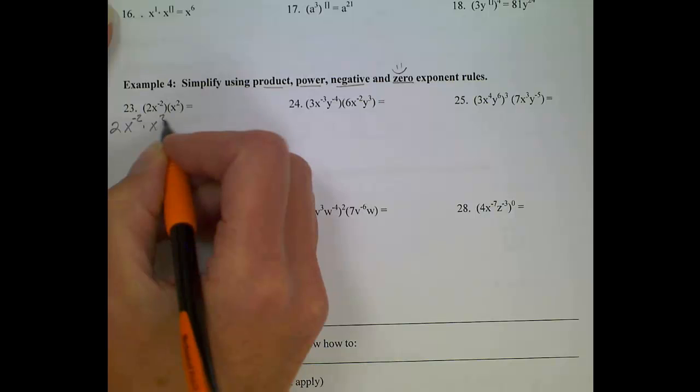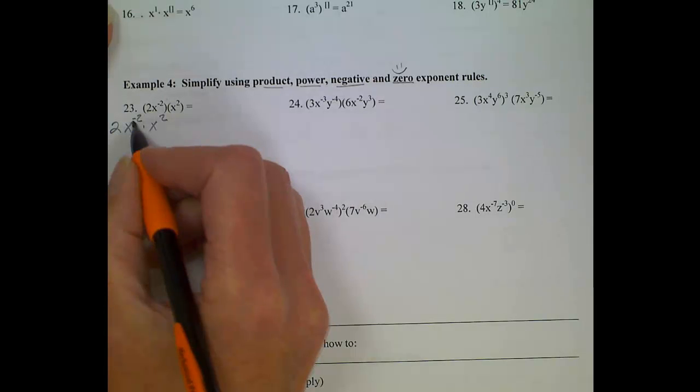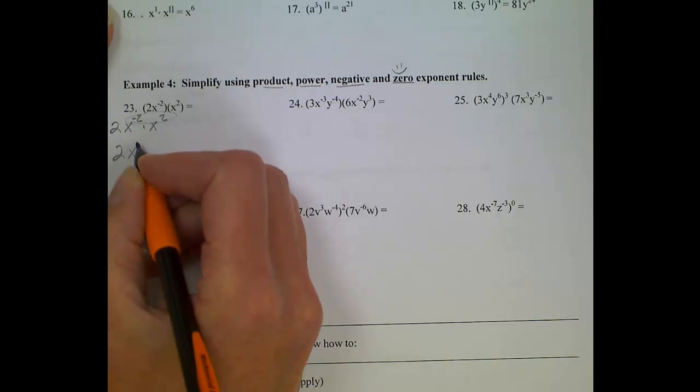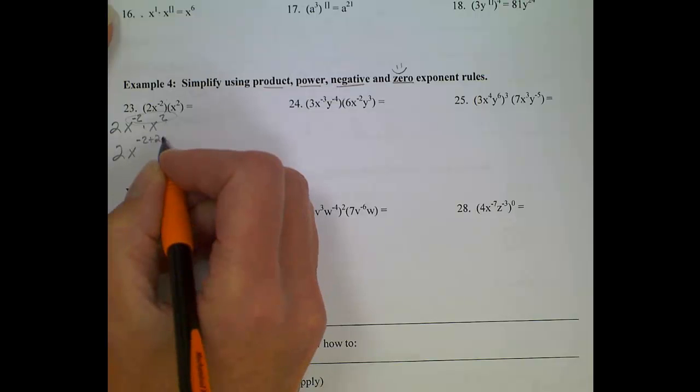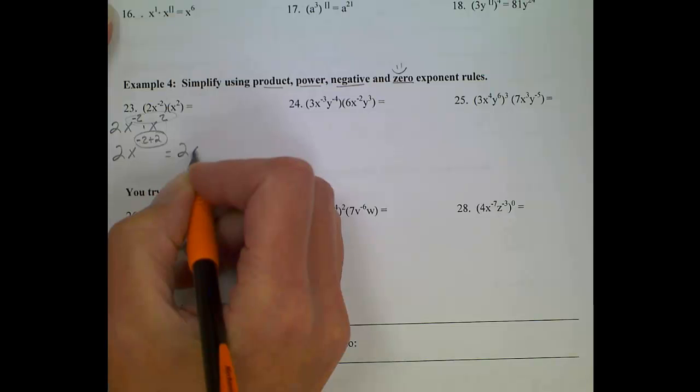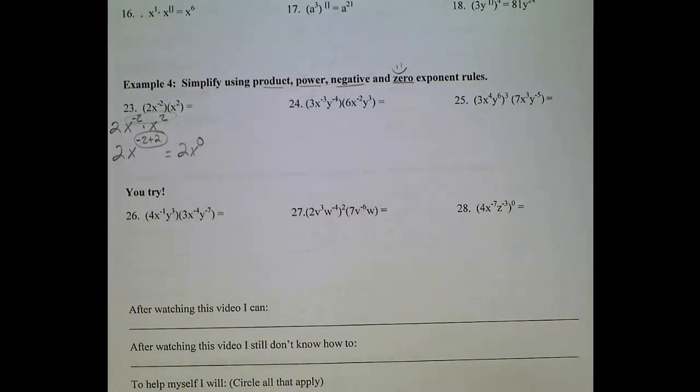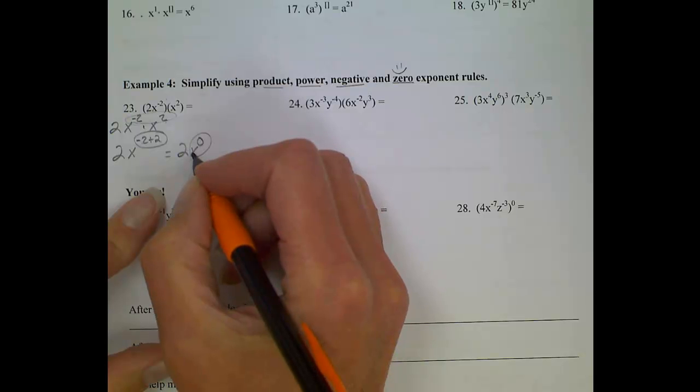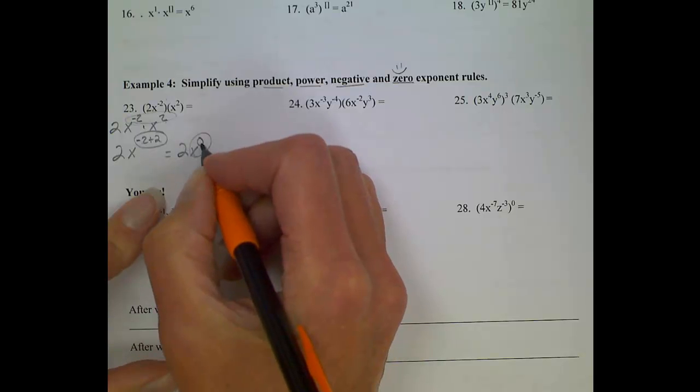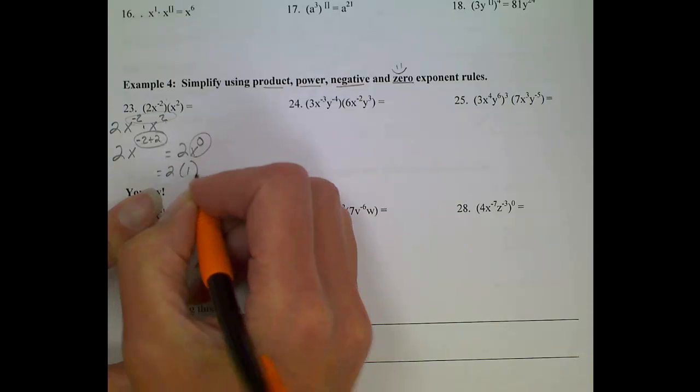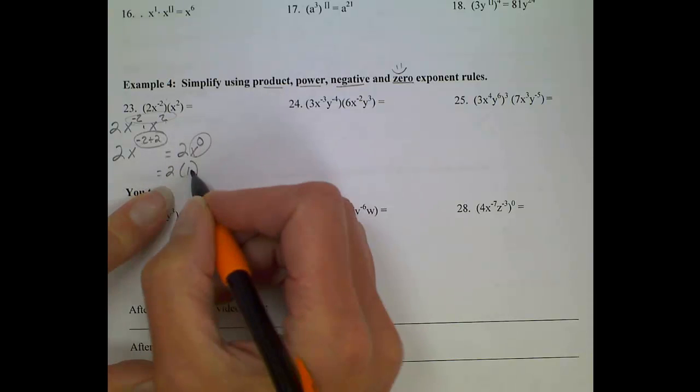Alright, same base. I'm multiplying. I add exponents. So I have two times x to the negative two plus two. Negative two plus two should give me zero. So two x to the zero, well that can't be a final answer, because I know if I evaluate x to the zero, any number raised to the zero power is one. So final answer, after you replace x to the zero with one, would be two.